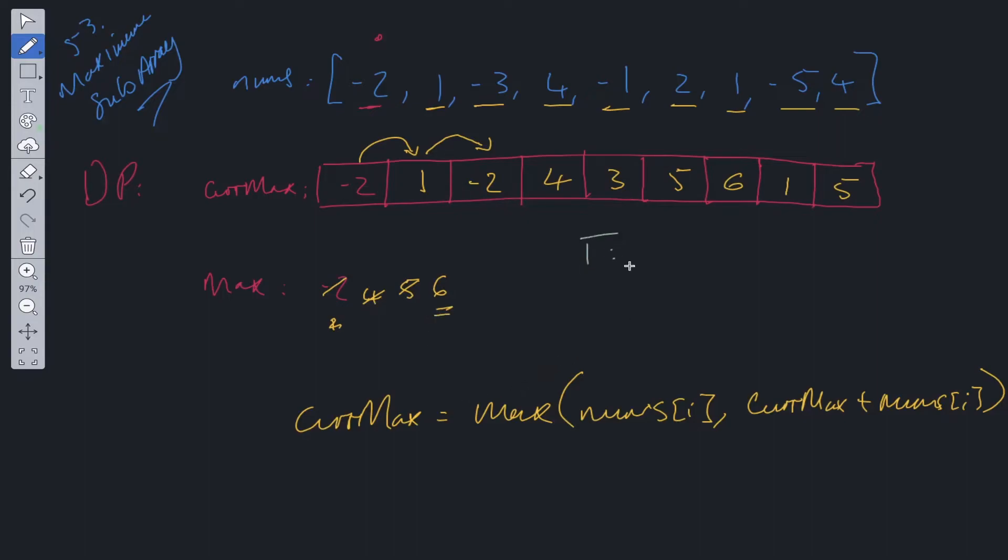So in terms of time complexity, this is going to be O of n because we're looping through the nums array once. So n is the integers within the nums array, and we're going to be doing this in place. So space complexity is going to be O of 1.